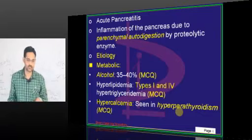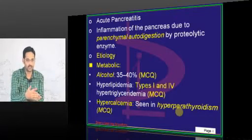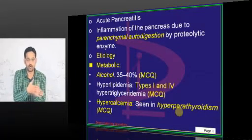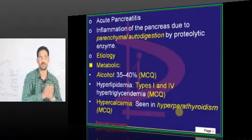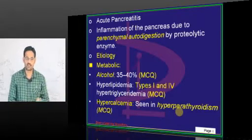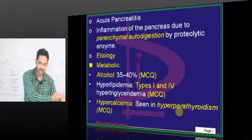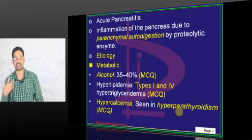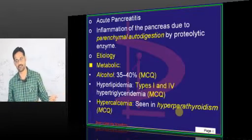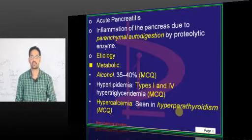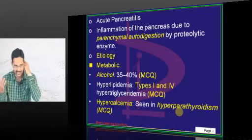A second mechanism: the CBD and pancreatic duct share a common channel of about one centimeter before opening at the ampulla. If obstruction is at the ampulla, bile can reflux back into the pancreas through the patent pancreatic duct, causing pancreatitis. So gallstones cause pancreatitis by two mechanisms.